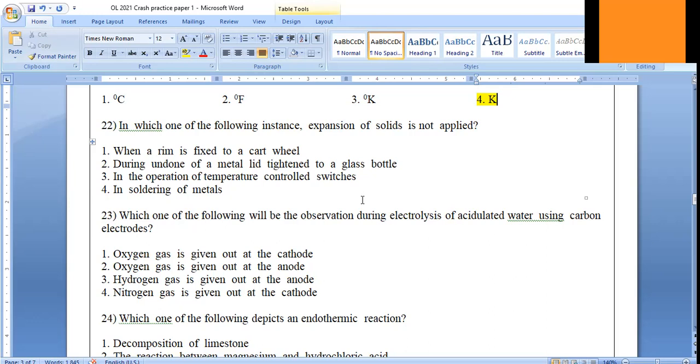Oxygen making process will take place in the anode, so that is the correct answer. Hydrogen making process will be taking place in the cathode - reduction process. You can check your unit number 12, electrolysis of acidulated water.